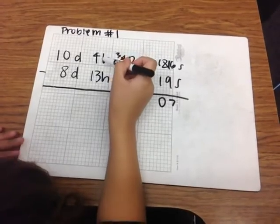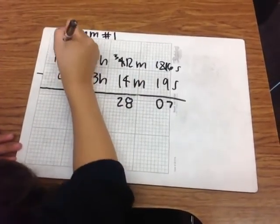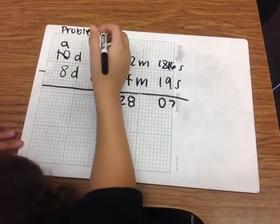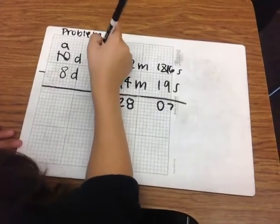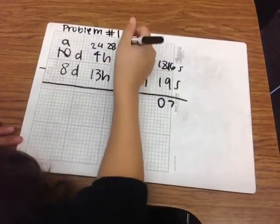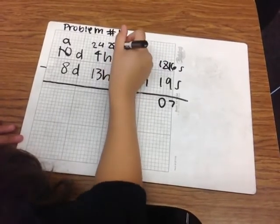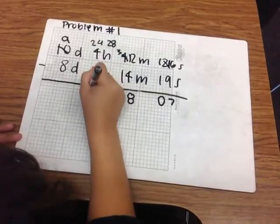Now, since we cannot subtract 14 minus 13, we need to borrow a day. So this turns into 9. And since a day is 24 hours, 24 plus 4 equals 28. So now, 28 minus 13. 8 minus 3 equals 5, and 2 minus 1 equals 1.